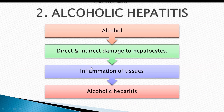The next phase is alcoholic hepatitis. Alcohol directly and indirectly damages the hepatocytes, resulting in inflammation. This inflammation of the hepatic tissue due to alcohol is known as alcoholic hepatitis. We will discuss in detail how alcohol damages the hepatocytes in the next slides.